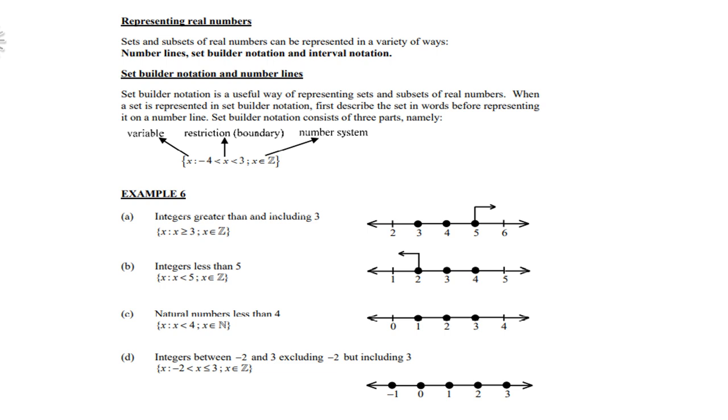Look at d, integers between -2 and 3, excluding -2 but including 3. So you include 3 but exclude -2. Therefore, you only show -1, 0, 1, 2, and 3. Because remember, they are integers, no fractions whatsoever.